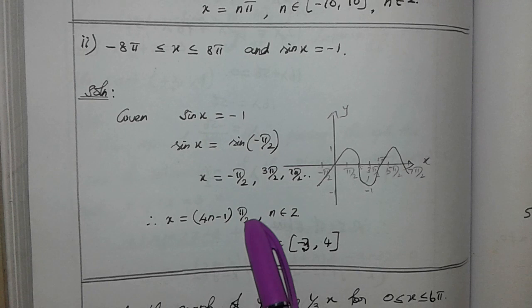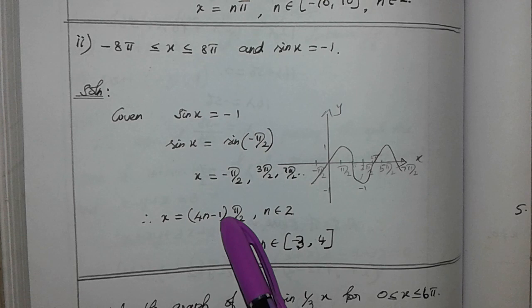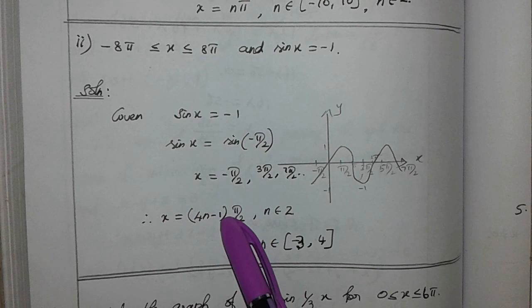If we apply 5, 20 minus 1 is 19, so 19π by 2. If 9.5π is greater than 8π, then we apply n = 4 to the left side.